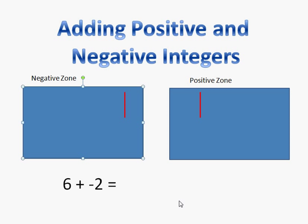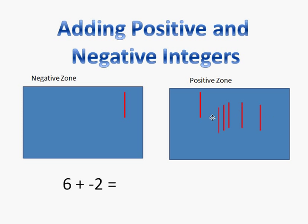So this first problem is six plus a negative two. I need to have six numbers in my positive zone — one, two, three, four, five, and six. And now I'm adding two negative numbers, so I need to have two numbers in my negative zone — one and two.